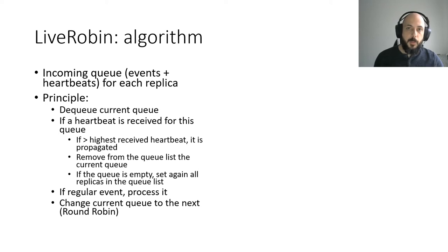Its principle is based on computing in a round-robin manner events until a heartbeat for this replica is received. Then, events of this replica are not processed anymore. Once heartbeats have been received for all replicas, we process again all incoming queues. We show this on the example on the right. Here we have two tasks with two replicas, one with two partitions, transmitting events to a task T3. T1 sends orange events, the first replica of T2 green events, and the second replica blue events.